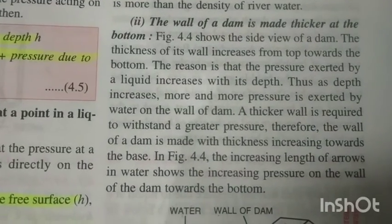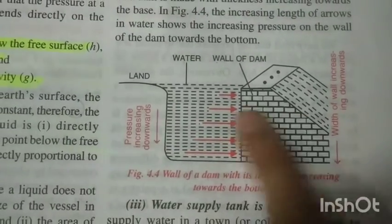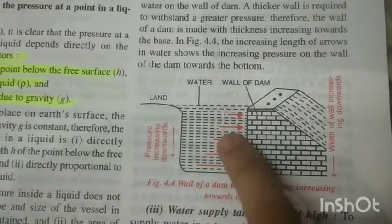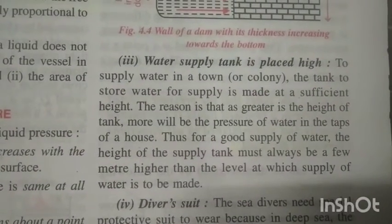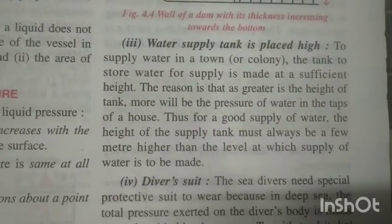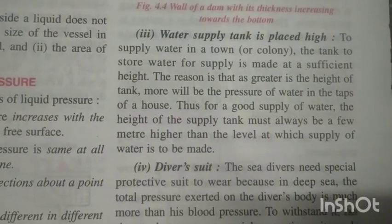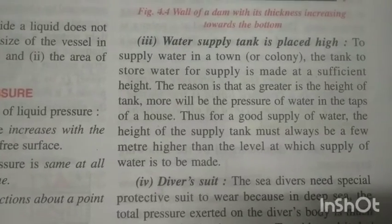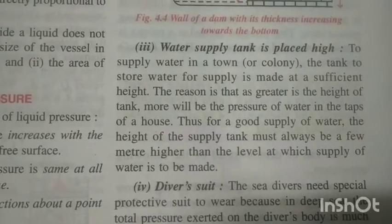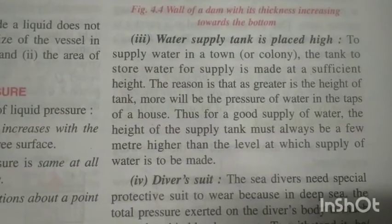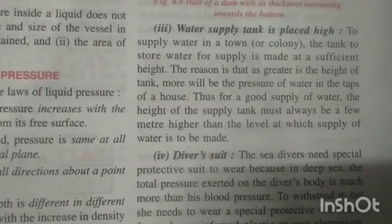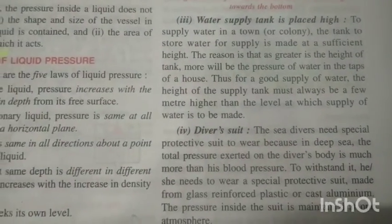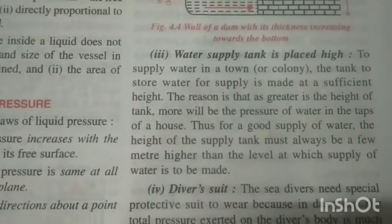The depth of the liquid increases the pressure. This also explains why in hospitals, when a patient is weak, the doctor's saline or glucose bag is placed high on a stand. Our body can't suck the liquid in, so it is placed high so that the liquid slides down through the pipe and reaches the body — the height provides the necessary pressure.